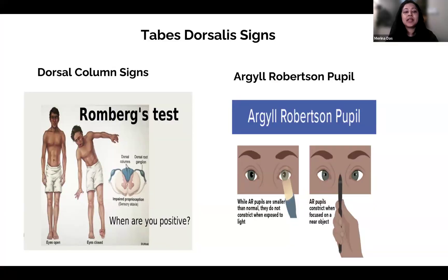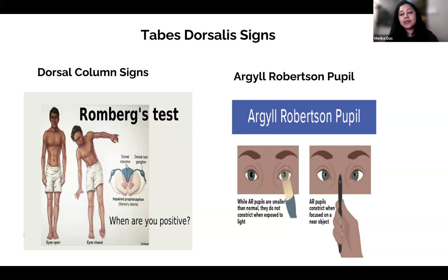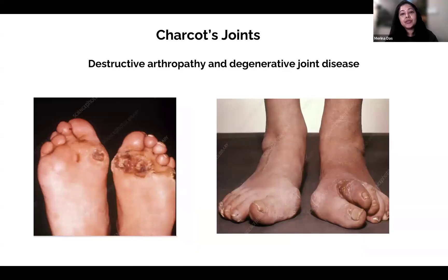Here are some pictures of tabes dorsalis signs. The Argyll Robertson pupil is particularly associated with tabes dorsalis, but also seen in general paresis. Charcot's joint — degenerative neuropathic arthropathy — also occurs with tabes dorsalis. The dorsal column signs are demonstrated by the Romberg test: the patient falls when asked to stand with eyes closed. The Argyll Robertson pupil shows no constriction to light but constricts with accommodation. The late disease takes 15 to 30 decades to manifest, and the incidence of tabes has been declining. With HIV, asymptomatic and symptomatic meningitis and meningovascular syphilis are the predominant manifestations.